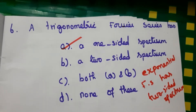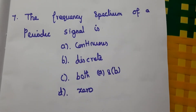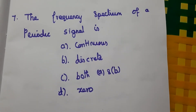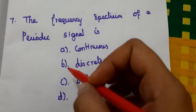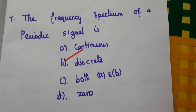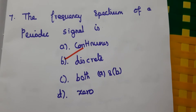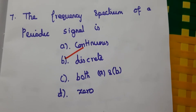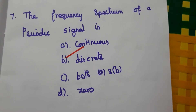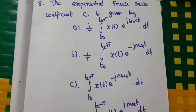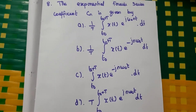Seventh question: the frequency spectrum of a periodic signal is discrete. So here the answer is B.